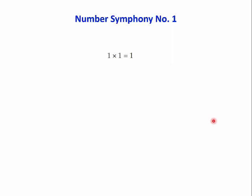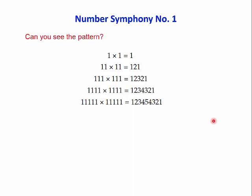Here's what we might call a number symphony. One times one is one. Eleven times eleven is one, two, one. One hundred and eleven times one hundred and eleven is one, two, three, two, one. Obviously there's a pattern here which will enable you to extend it as far as you like. Once you've seen the pattern, you can continue.